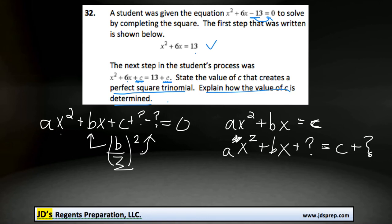So let's find out what the actual number is. Our b term in this problem is positive 6. So if we take 6, half it, and then square it, that would be equal to 3 squared, which is 9. So in this problem, the value of c is 9.